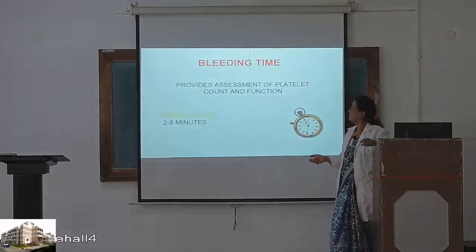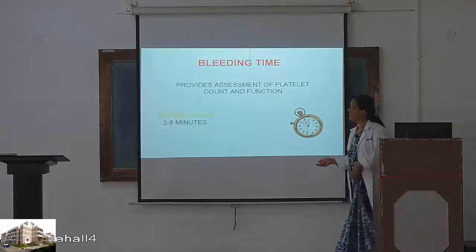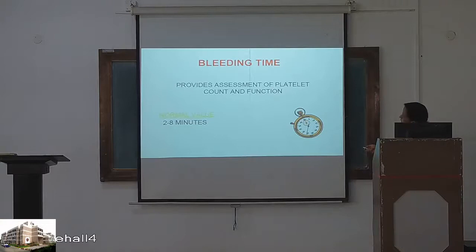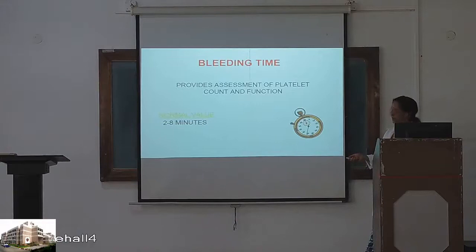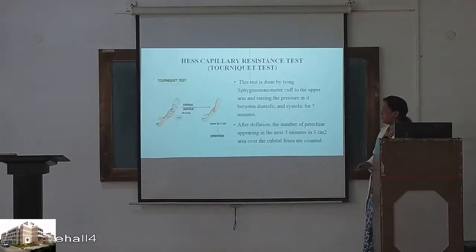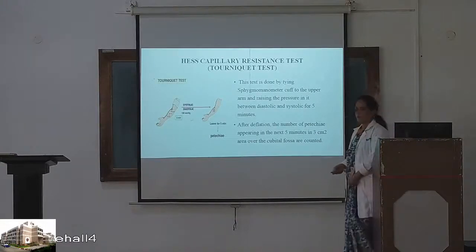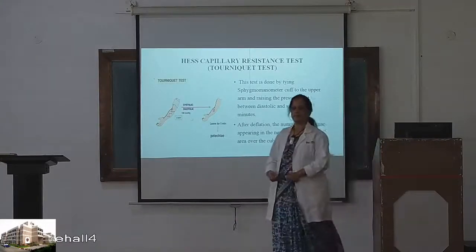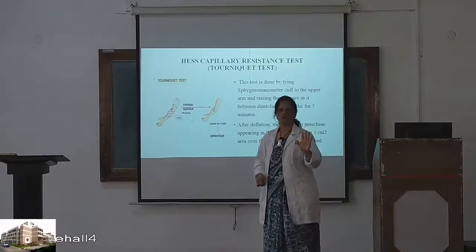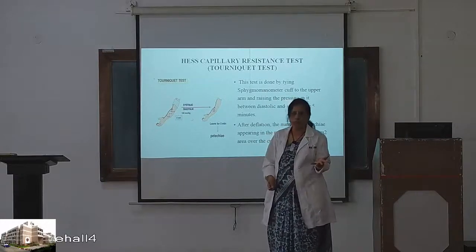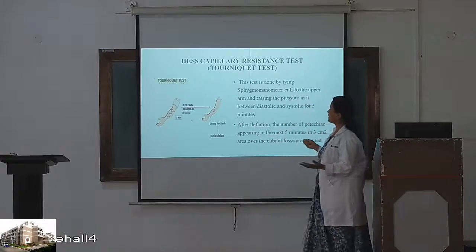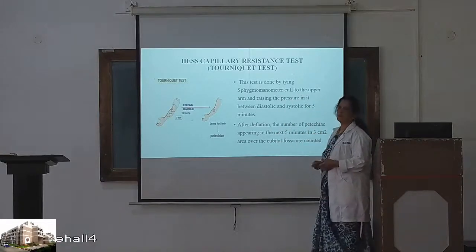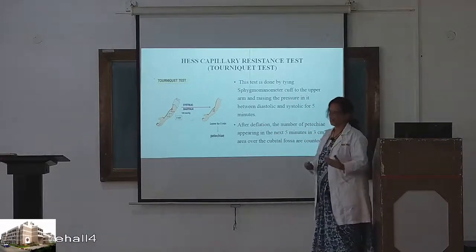Bleeding time provides assessment of platelet count and function. Normal value is 2 to 8 minutes. That is the first test. I have told you how it is done and the causes if prolonged. The next is the Hess capillary resistance test, also called Hess test.